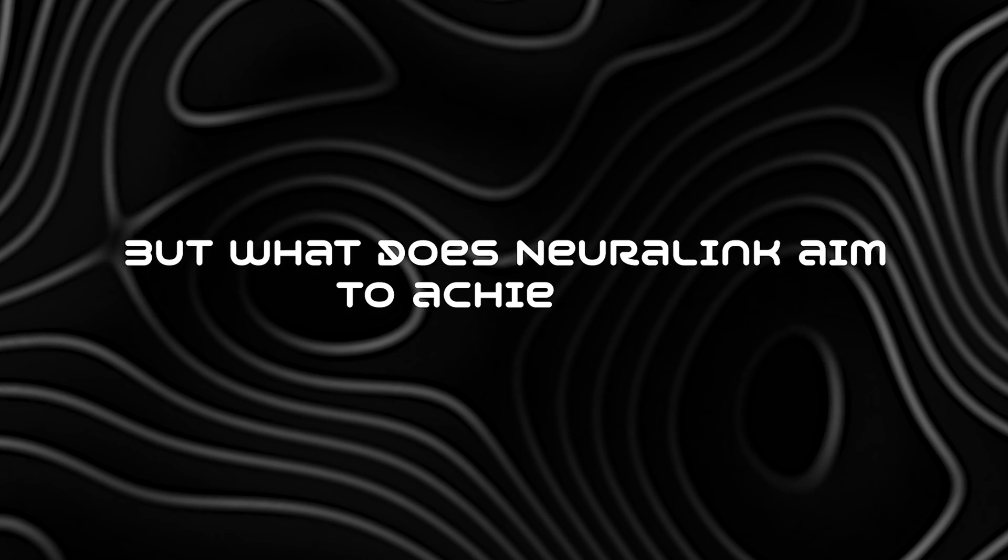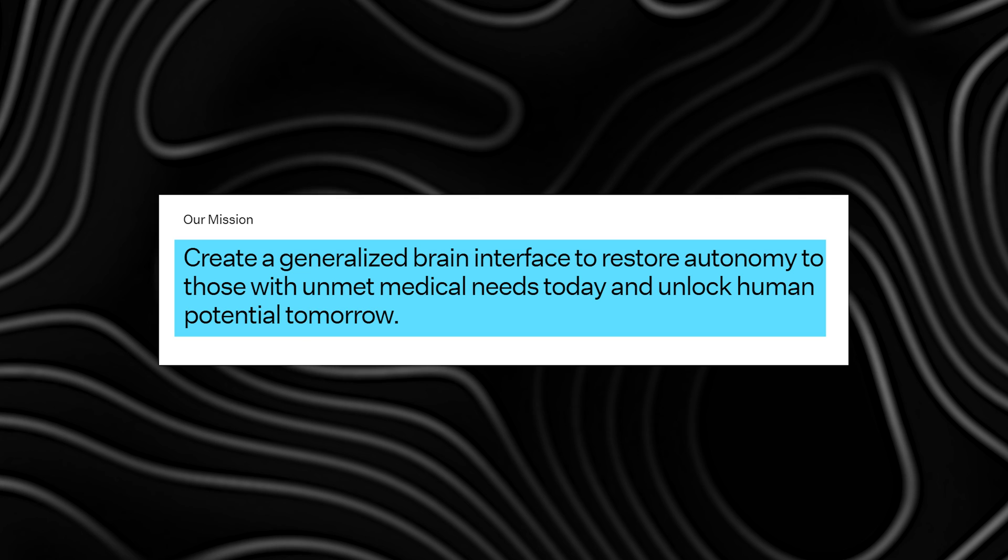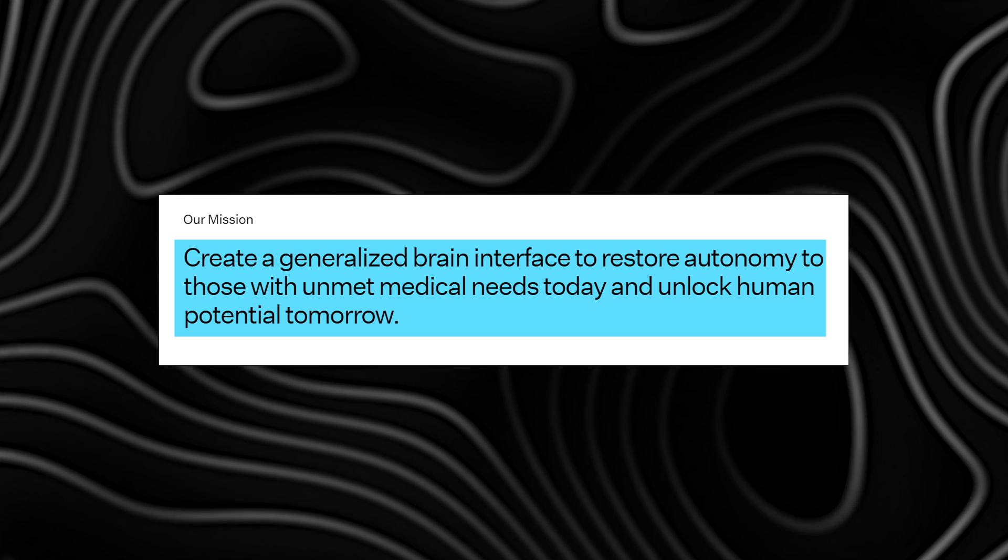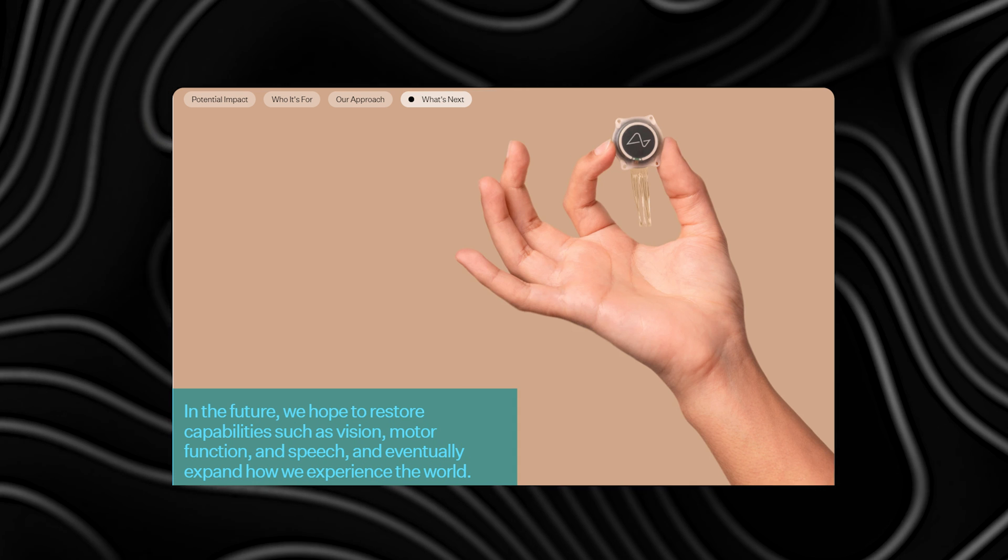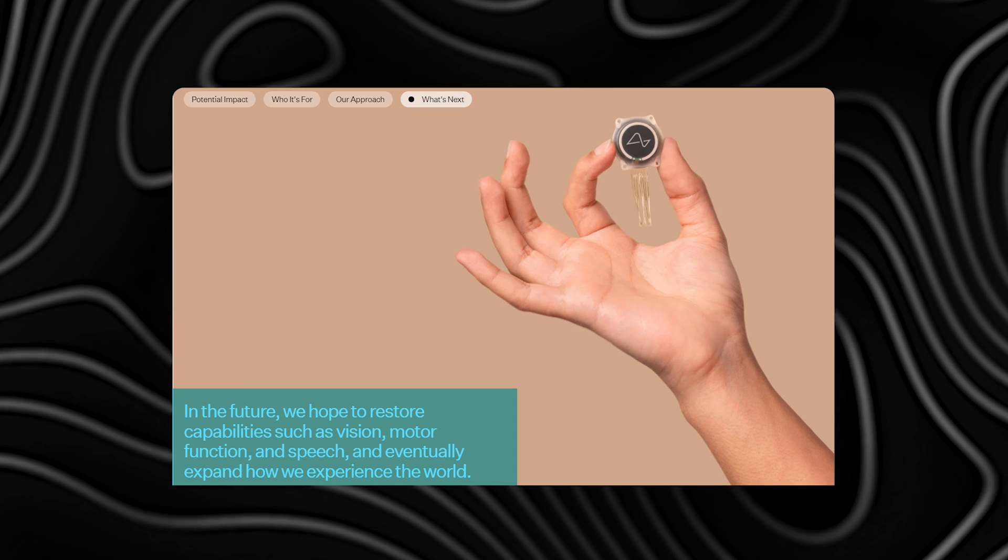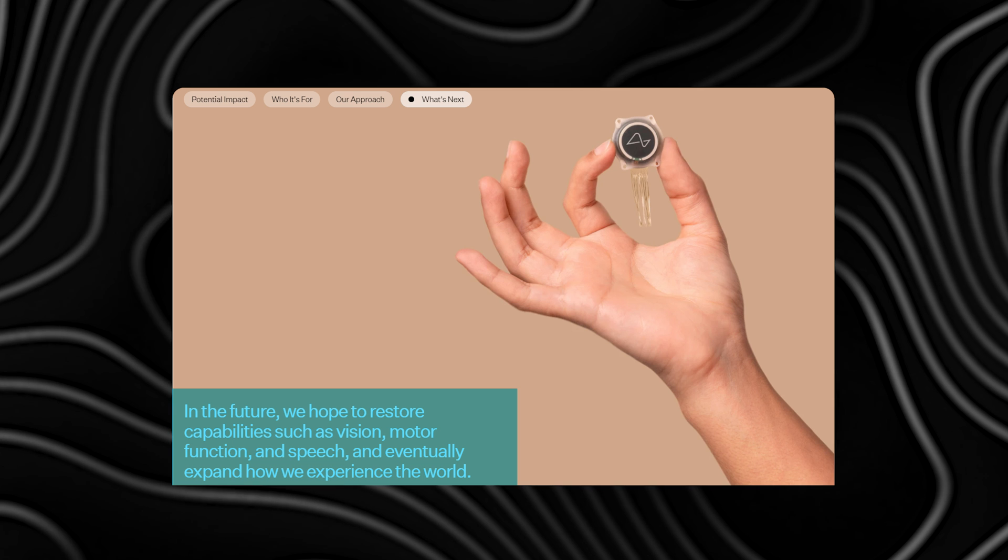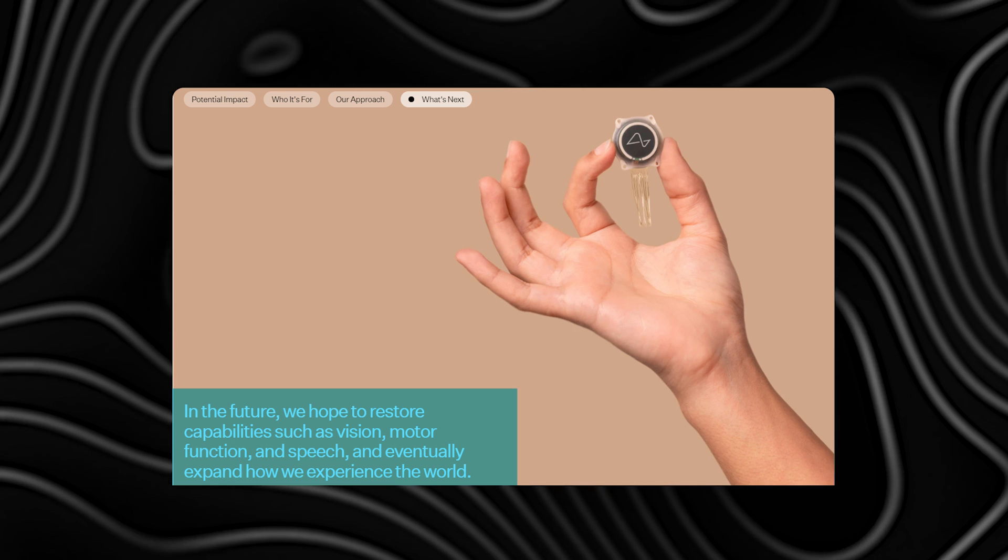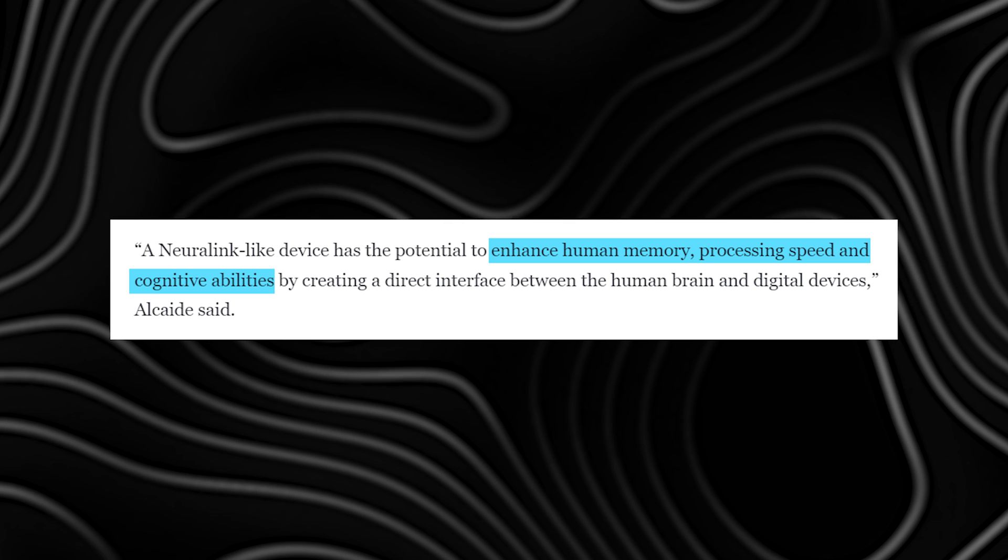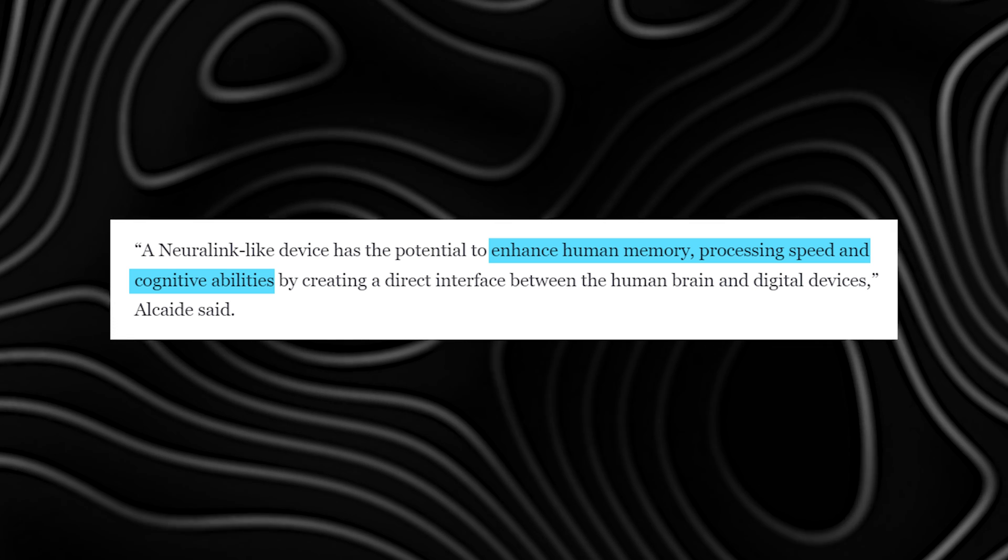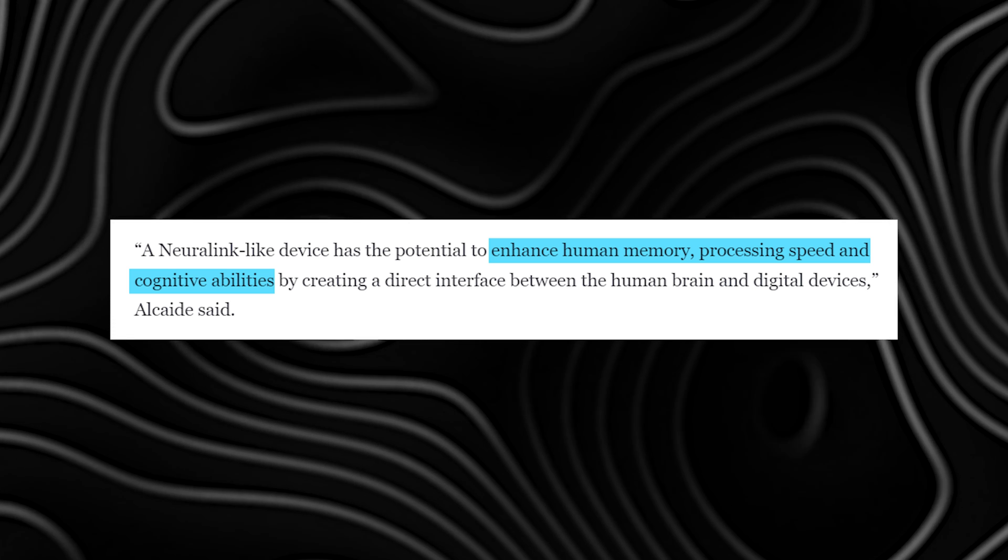But what does Neuralink aim to achieve? The company's primary goal is to help those immobilized by paralysis regain lost communication skills. Beyond that, they aspire to restore motor, sensory, and visual functions, along with treating various neurological disorders. The Link could potentially enhance human memory, processing speed, and cognitive abilities, creating a direct interface between the brain and digital devices.